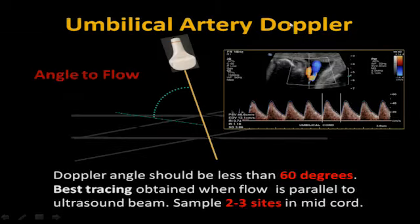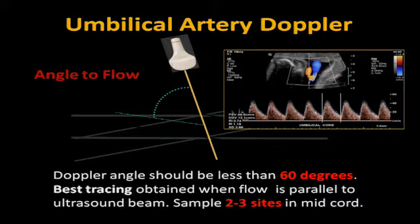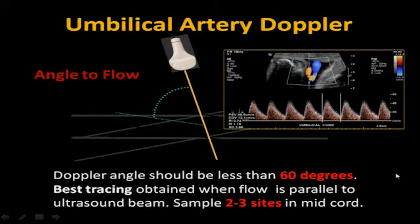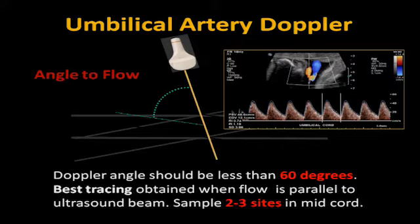For umbilical artery Doppler, the angle should always be less than 60 degrees. Best tracing when flow is parallel — angle of inclination of zero always gives the best information. Do we need angle correction on the umbilical artery? No — the only one you need angle correction on is the MCA, because you're looking for the peak systolic value. For the umbilical artery, the best tracing is mid-cord. If you're closer to the placenta, you can artificially get reassured as vessels are bigger there; too close to the fetal abdomen gives artificially higher values.